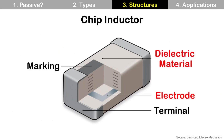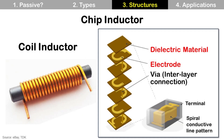This is the structure of chip inductor. Inside of chip inductor, dielectric material and electrodes are stacked like chip capacitor, and it makes an inductor. At the outside, there are terminals at both ends and marking on top. But this electrode pattern looks different compared to chip capacitor. To make the same structure as a coil inductor at the right, electrodes have a spiral conductive pattern and each electrode layer is connected by vias vertically.